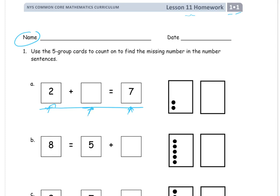So there's like a change, and we're adding more, but we don't know. What's unknown is how much more we had to add. So this is how you figure that out, and that's what we're practicing. It says use the five group cards to count on, and that's how we're going to do it, to find the missing number in the number sentences. You just count on to do it.